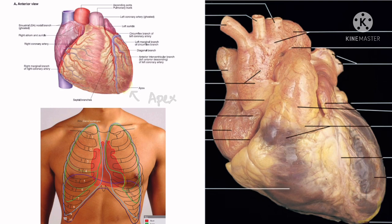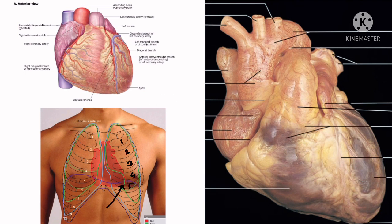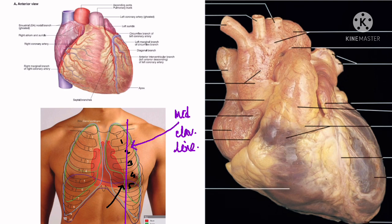The apex of the heart is a conical area formed by the left ventricle only. It is directed downwards, forwards, and to the left. It lies at the level of the left 5th intercostal space, 9 cm away from the midline and just medial to the midclavicular line. The thrust of the apex is known as the apex beat, which represents the point of maximum cardiac impulse.